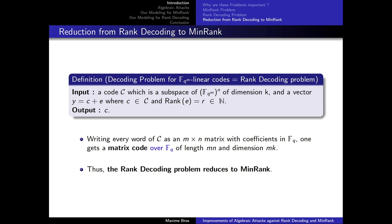There is a reduction from the rank decoding problem to min rank. When we have an instance of the rank decoding problem, we can write every word of C — a vector of length N with entries in F_{Q^M} — as an M times N matrix with coefficients in F_Q, as we did before when defining the rank metric. This gives a matrix code over F_Q of size M times N and dimension MK. Thus the rank decoding problem reduces to min rank. Be careful: the converse is not always true, because the rank decoding problem has more structure than general min rank instances.